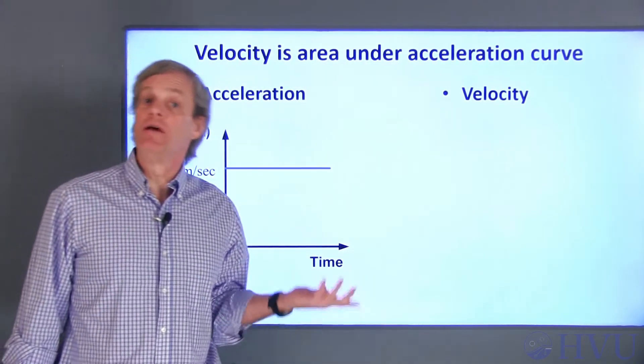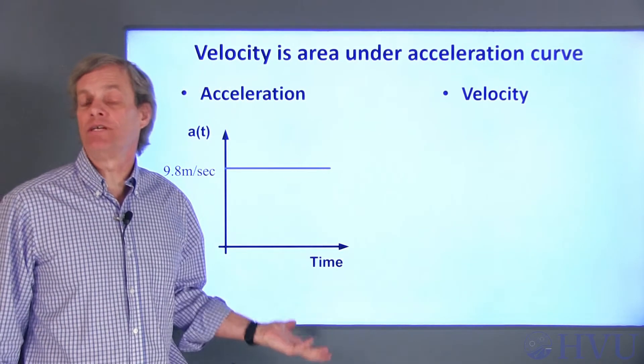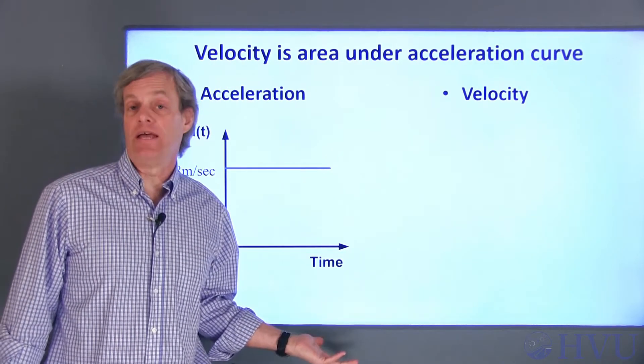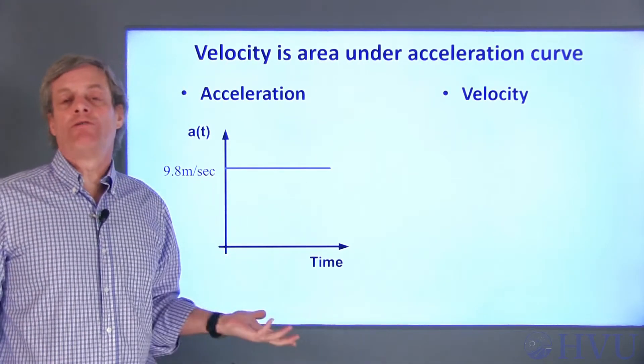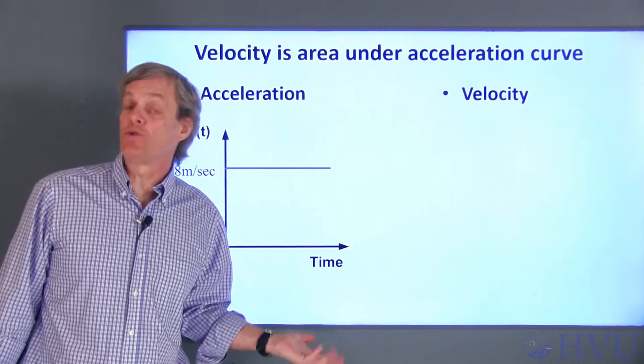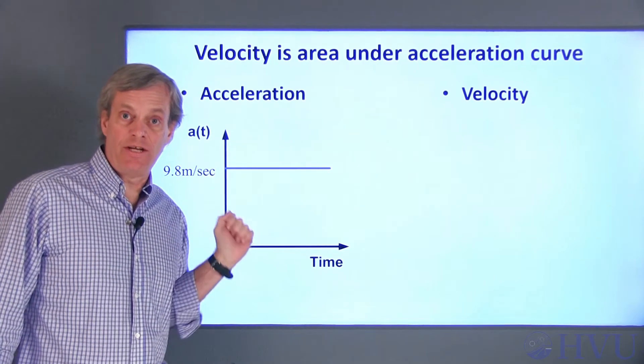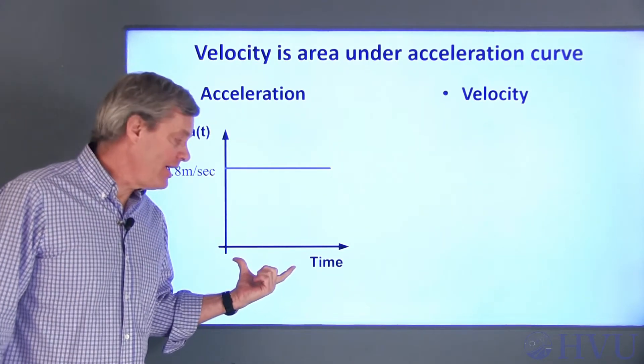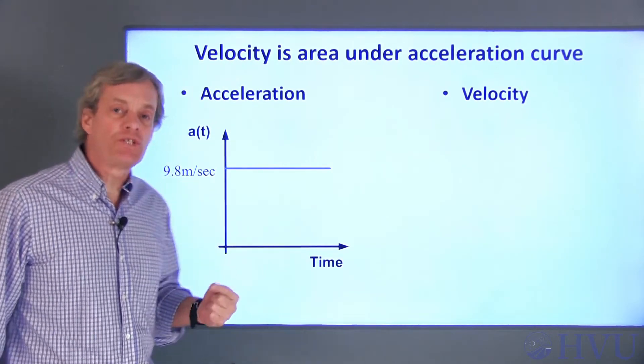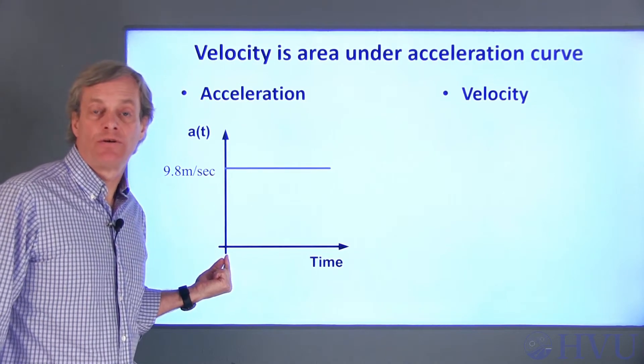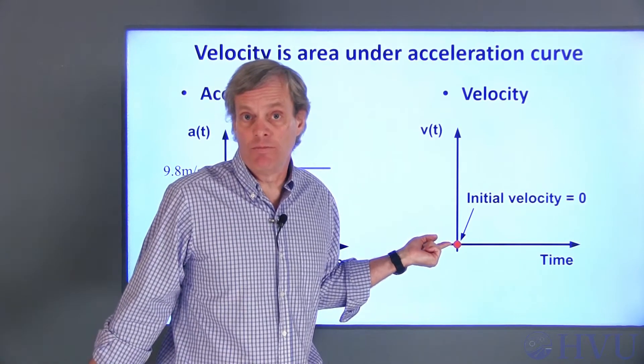As an example of an integration, if we drop a rock at the Earth's surface, it will accelerate downward at an approximately constant rate. So this is a plot of the rock's acceleration. We've already seen that acceleration is the rate of change, or the derivative of velocity, so velocity must be the integral of acceleration. So the area under the acceleration curve will give us the rock's velocity. But first, we need an initial velocity at time equal to zero.